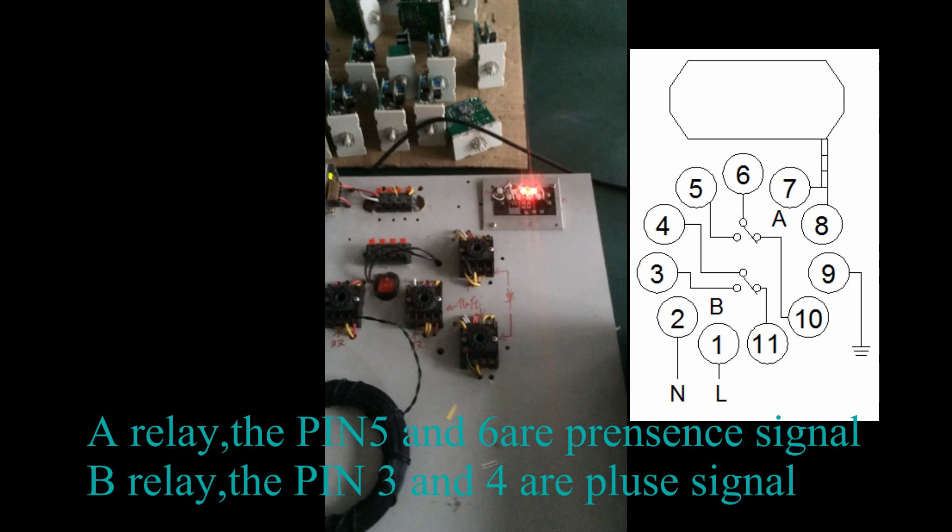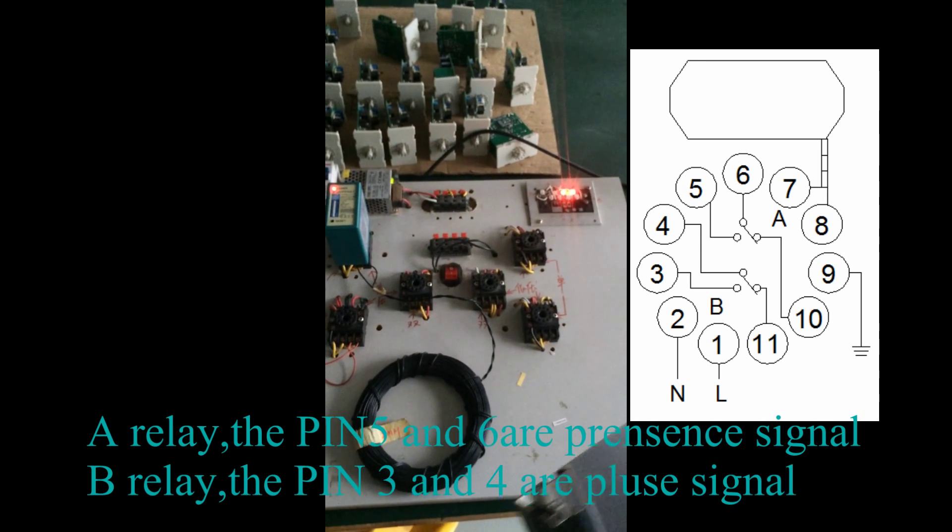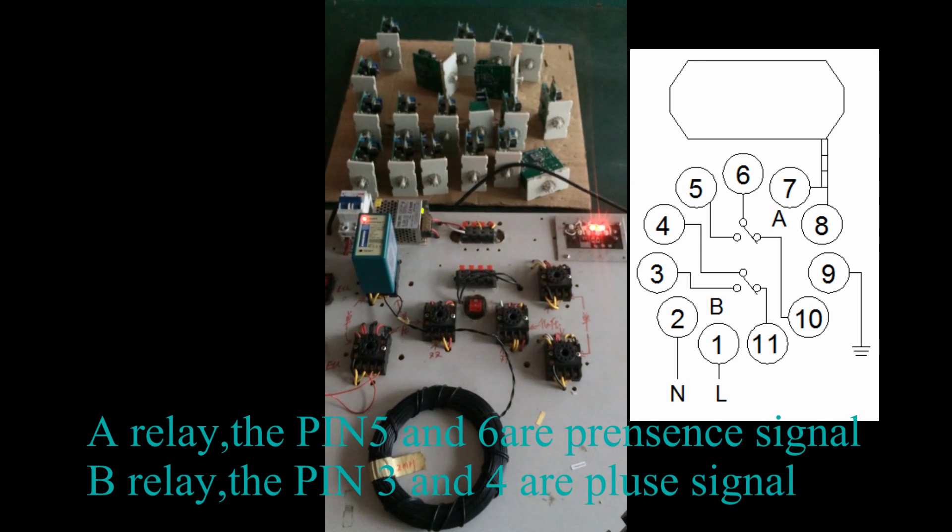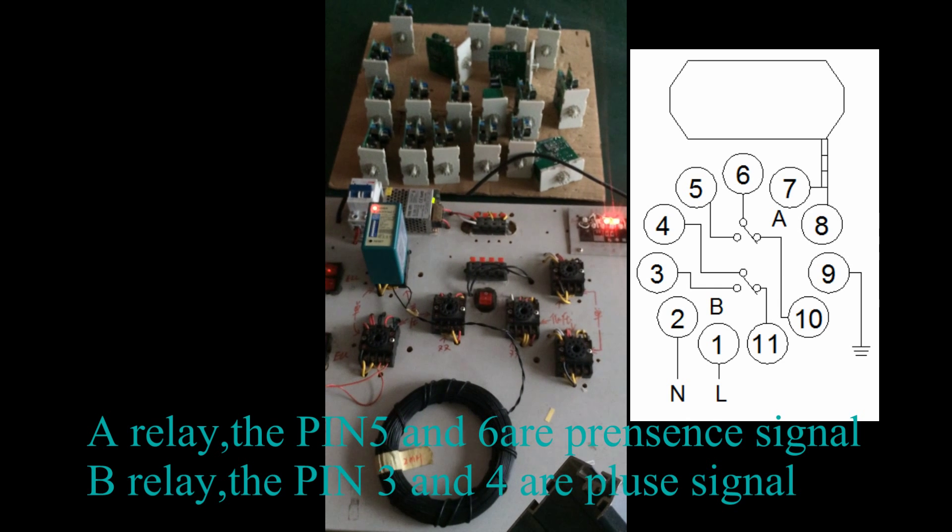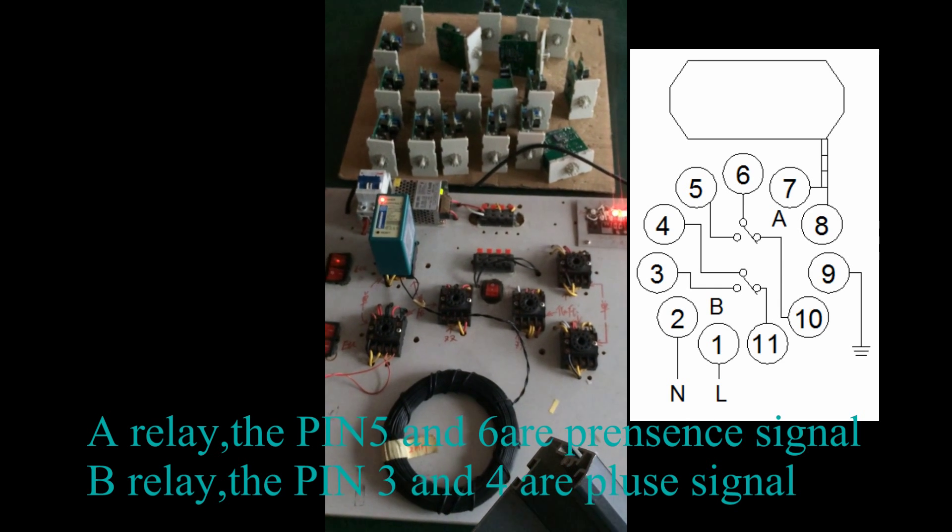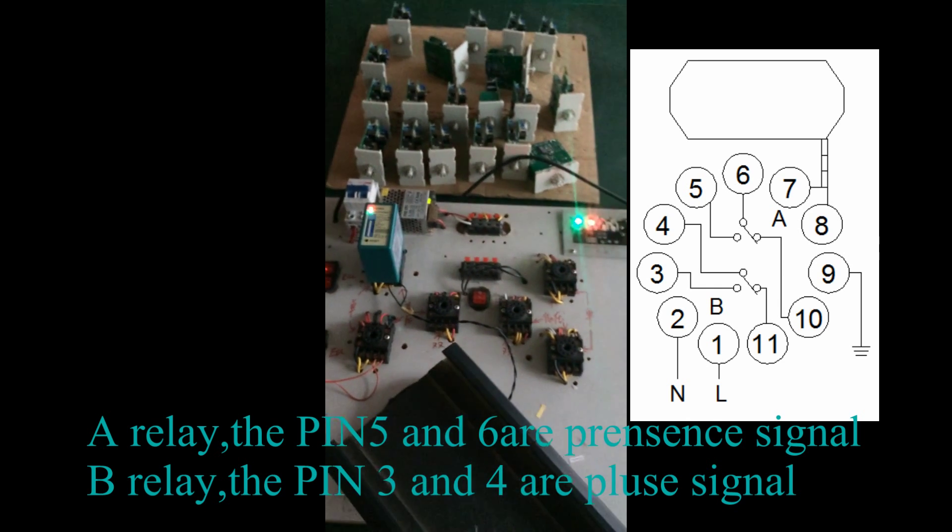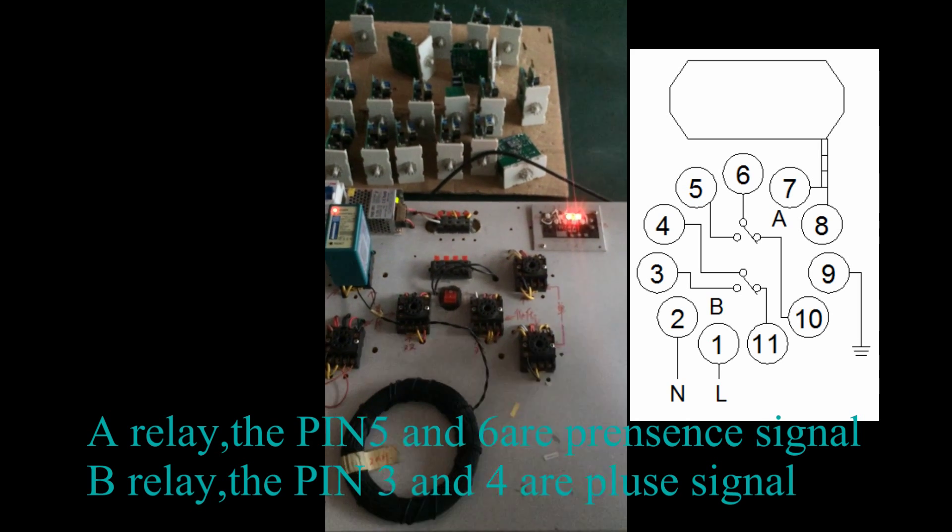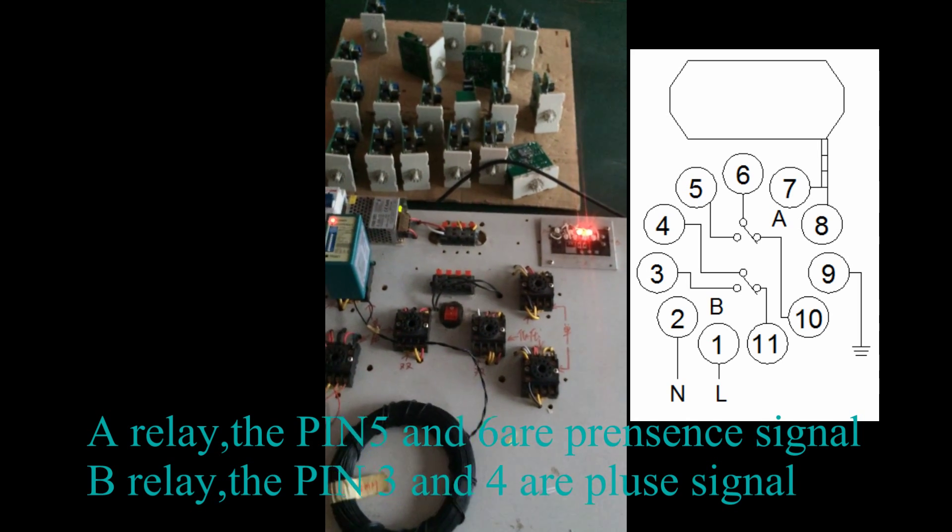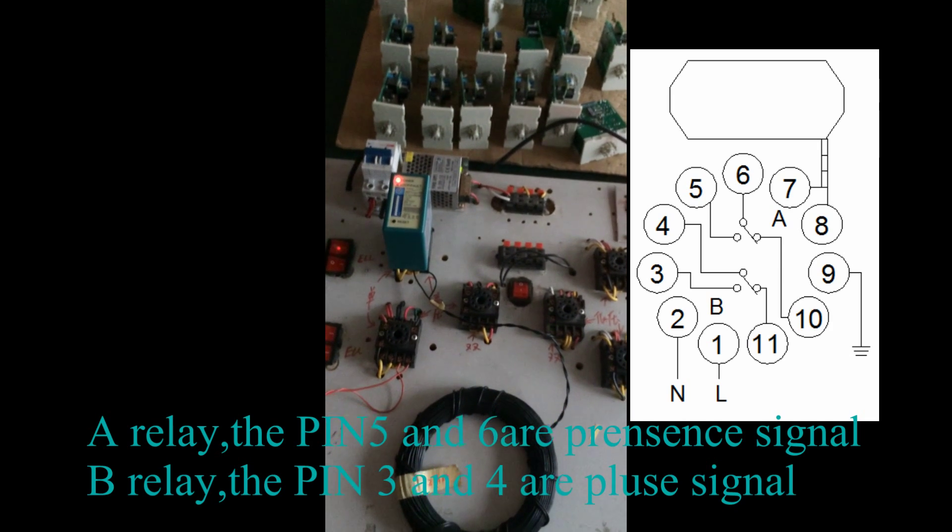We suggest the customer connect the presence signal to the barrier control. The pulse signal is just for counting the vehicles.